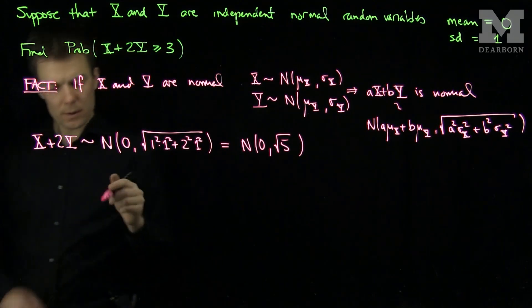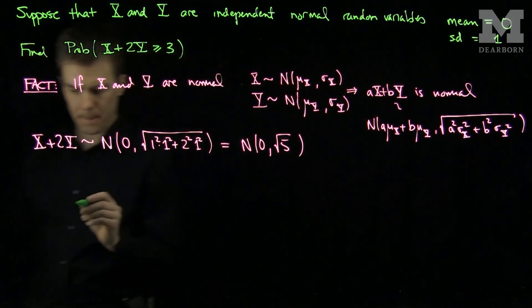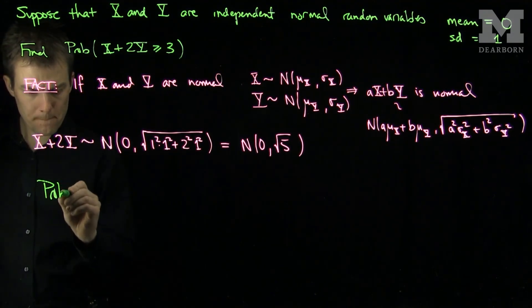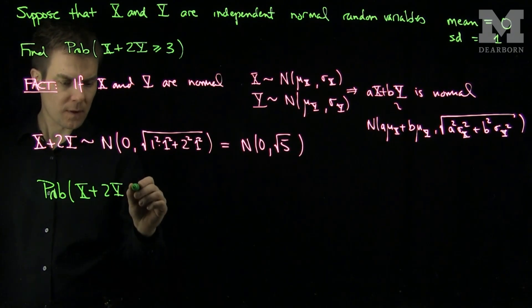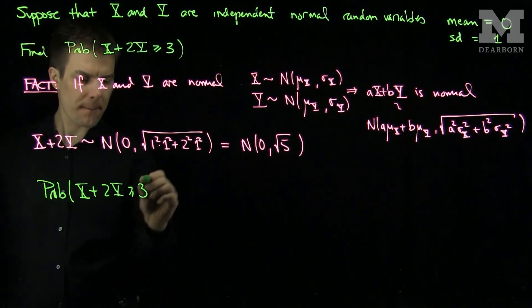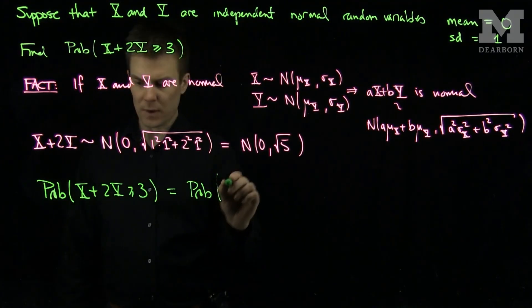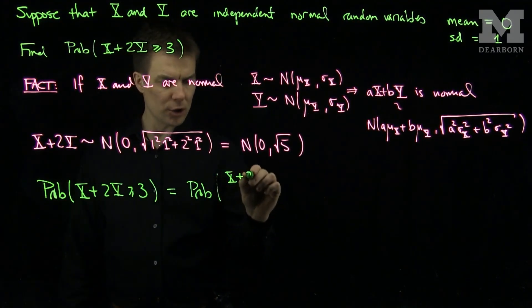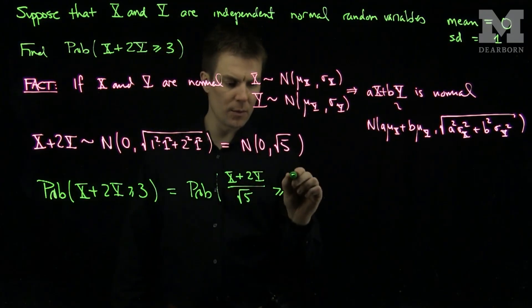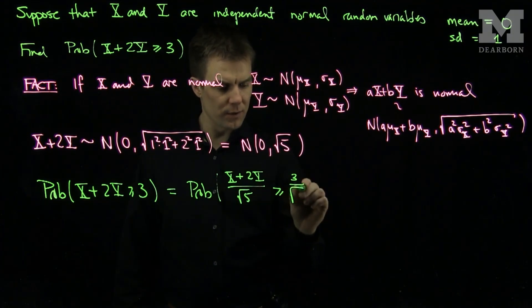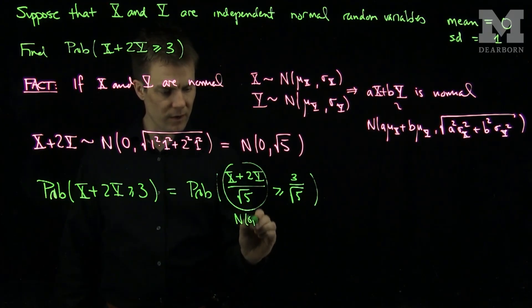And so what we need to do now is say that the probability that X plus 2Y is bigger than or equal to 3 is the same thing as the probability that (X plus 2Y)/√5 is bigger than or equal to 3/√5. And now this variable over here is a normal(0,1) random variable.